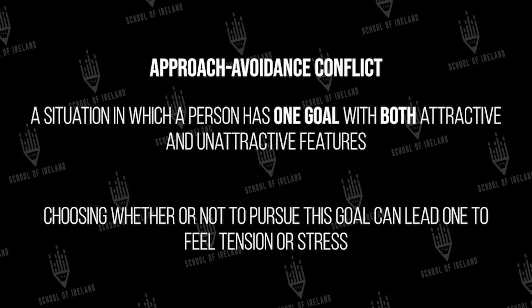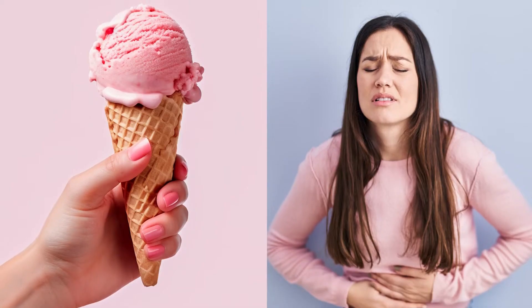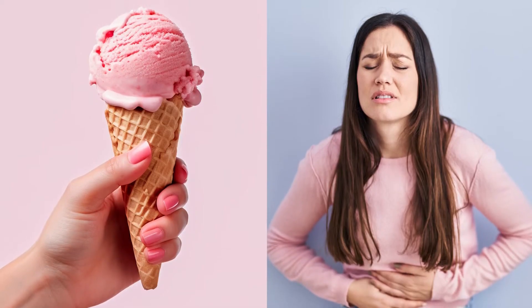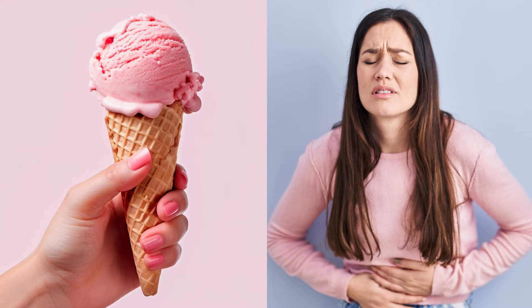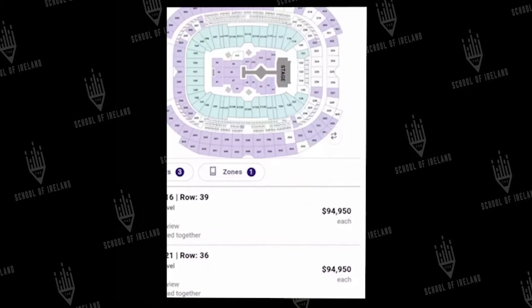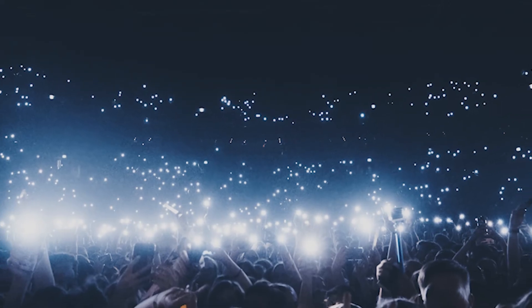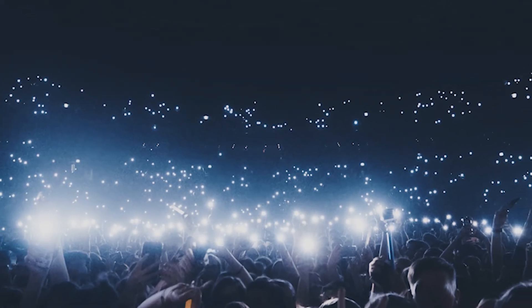Another type of conflict that Lewin identified is an approach-avoidance conflict. This is where an individual has a goal with both attractive and unattractive features. For example, let's say that somebody wants ice cream but they're lactose intolerant — the ice cream is the attractive feature, while getting sick is the unattractive feature. Another example is people buying ridiculously expensive Taylor Swift tickets, but they're still going to go to the concert and have a great time anyway.